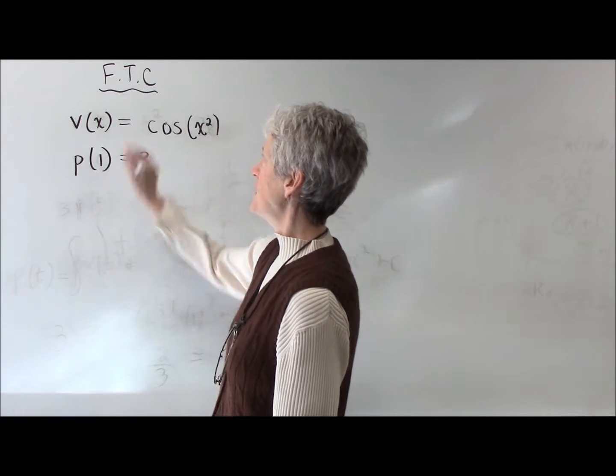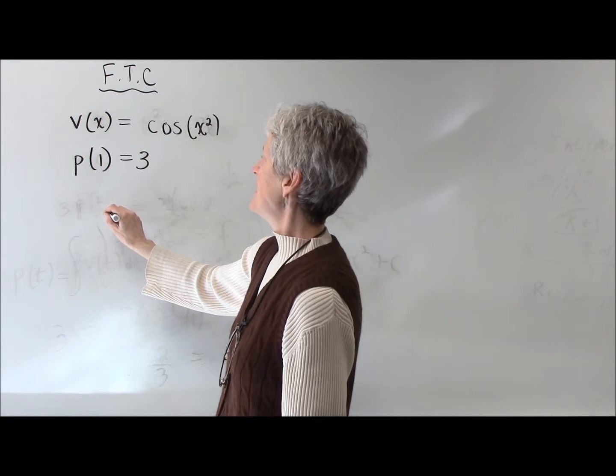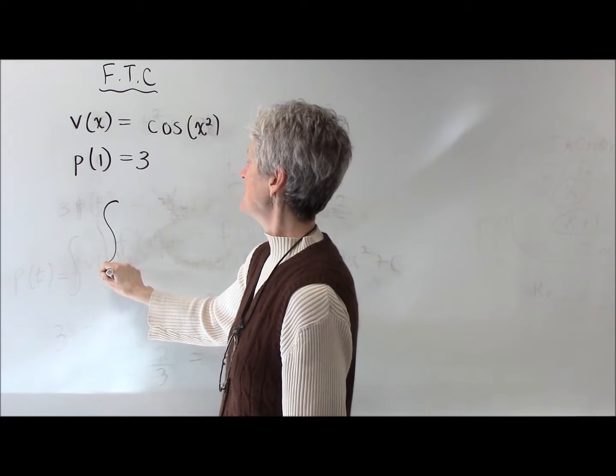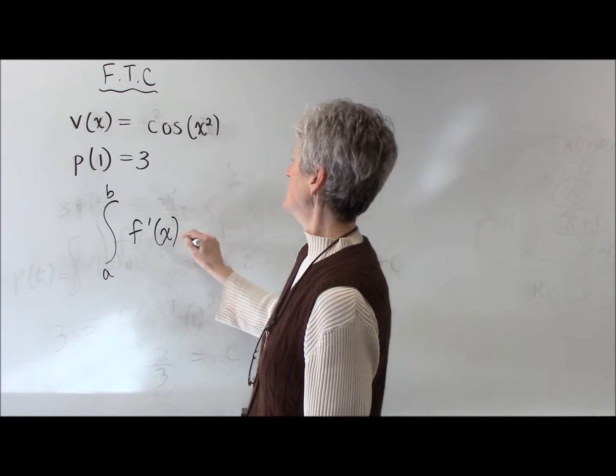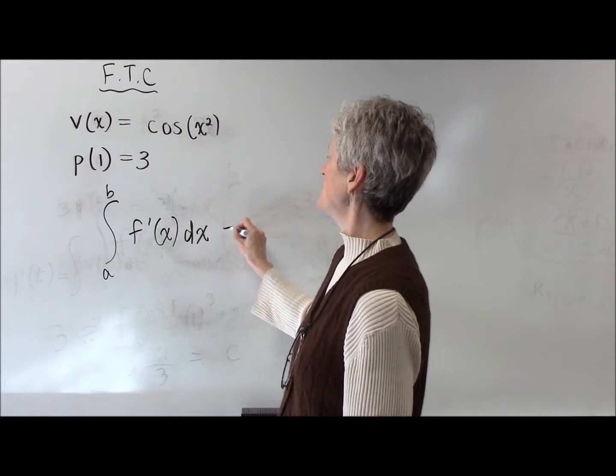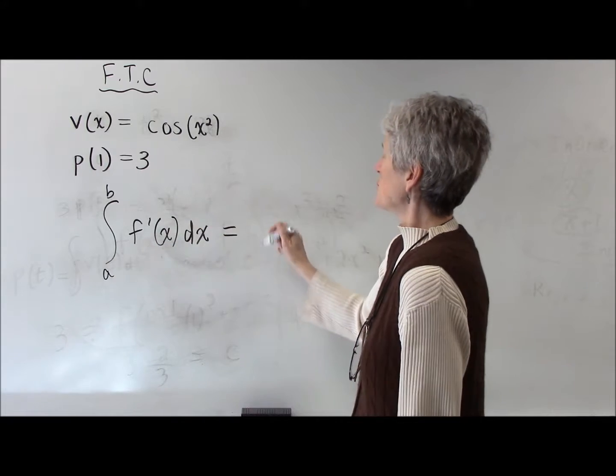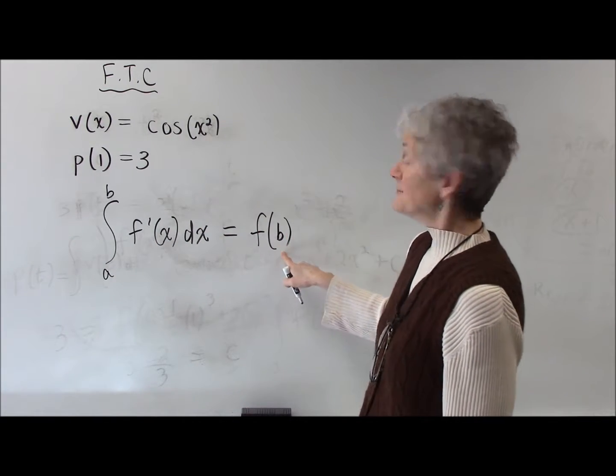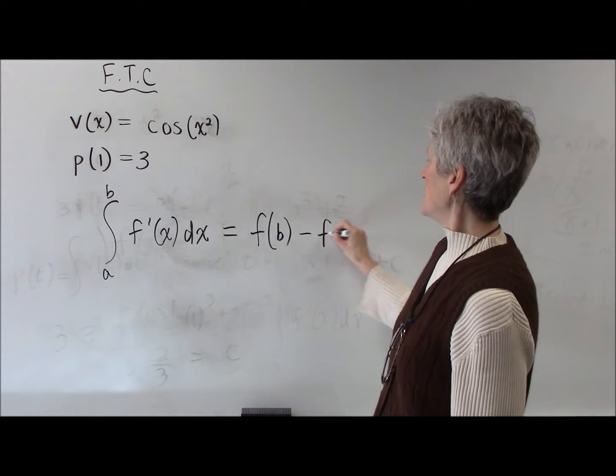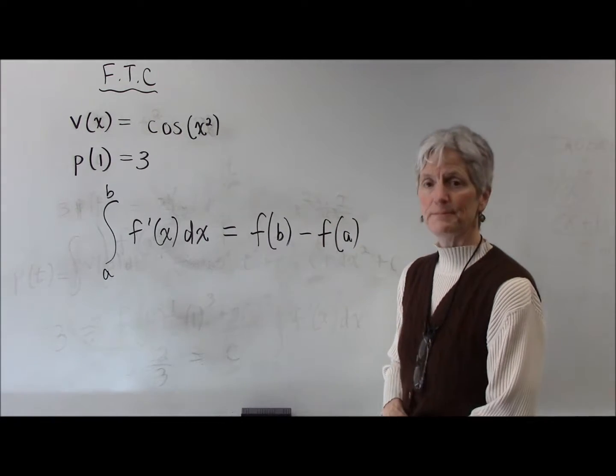Let's remember our fundamental theorem of calculus, part 1. That says that I can take the integral from a to b of f prime of x dx. You can write this in different ways. That's the antiderivative of f, which I'll just call f of x, evaluated at b, and then minus f of a.